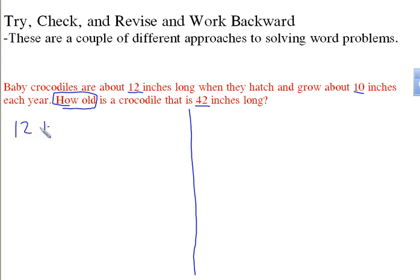If it was 10 years old, then it would now be 10 times 10 inches long because it was 10 years old, so now it's going to be 100. That would be one big crocodile, and it would be 112 inches. That's not where we're at. We're at 42 inches, so we know 10 is way too big.